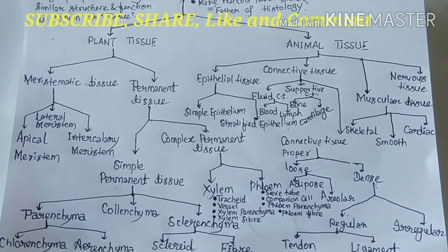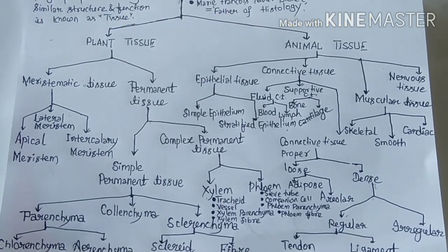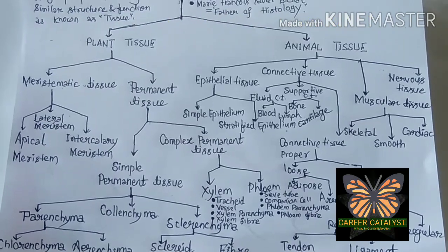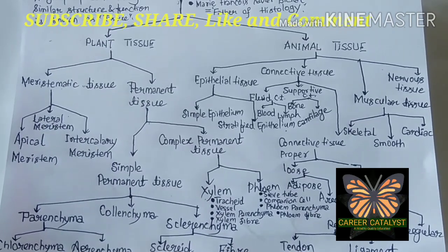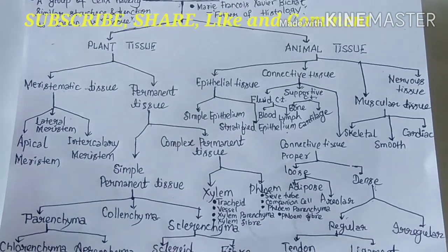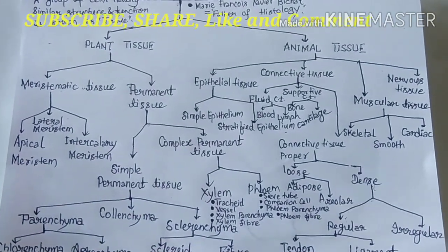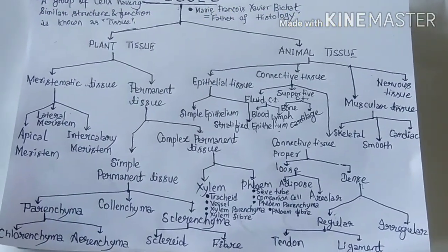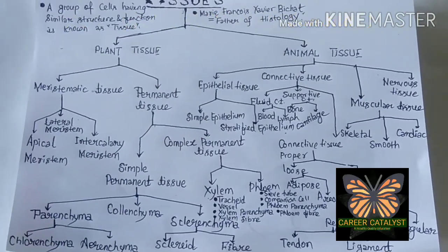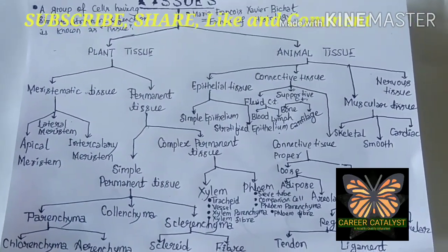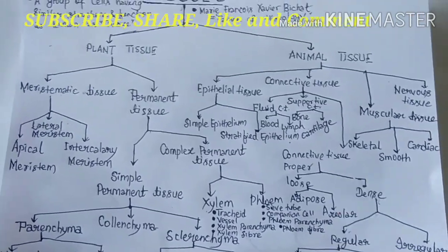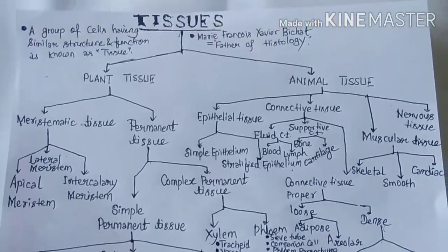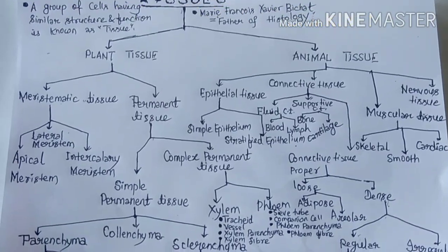Simple permanent tissue is also subdivided into three categories: parenchyma, collenchyma, and sclerenchyma. Parenchyma is further divided into two sub-types: chlorenchyma and aerenchyma.